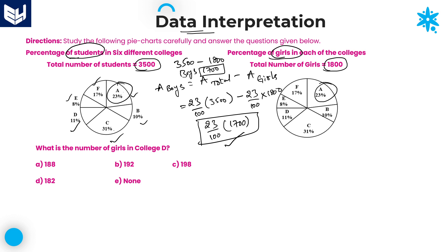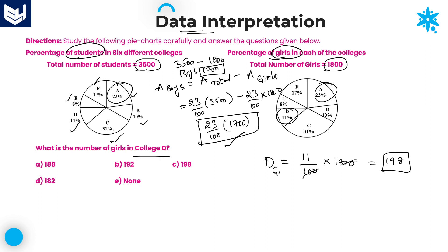This is a very important shortcut. Now the first question: what is the number of girls in college D? College D girls = 11% of total girls. Total number of girls is 1,800. So 11% of 1,800: two zeros cancel, giving 18 × 11 = 180 + 18 = 198. Total number of girls in college D is 198. Option C is the right answer.